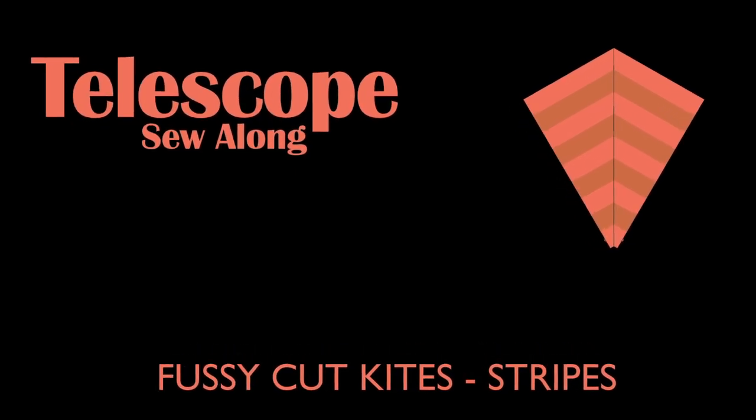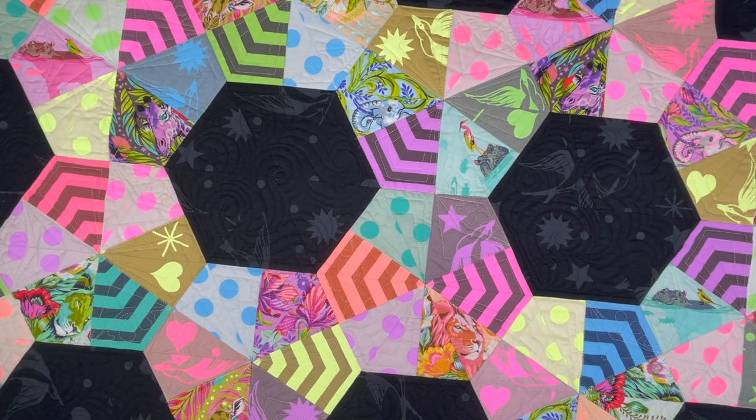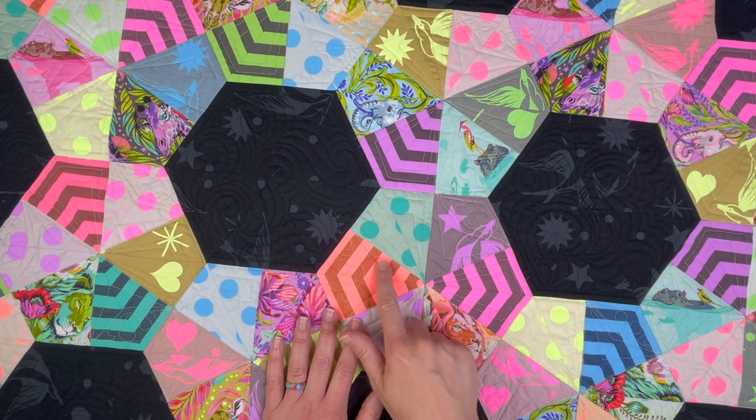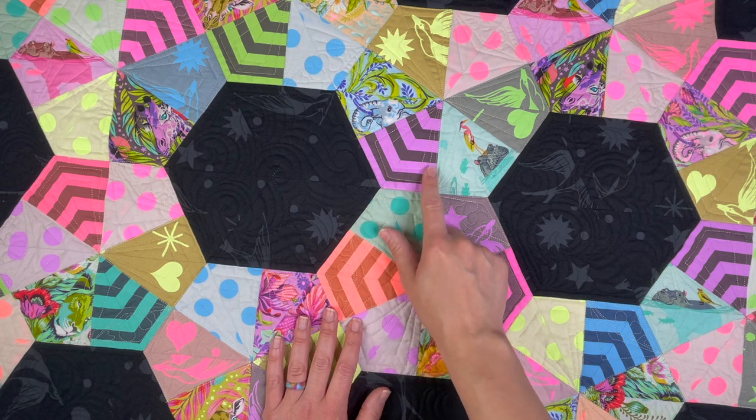I'm Julie Herman of Jaybird Quilts and welcome back to the Telescope Sew Along. Today I'm going to show you how to perfectly cut your striped fabric to create mitered kites for your telescope quilt.